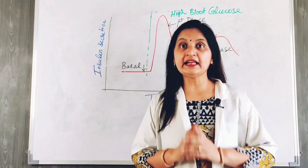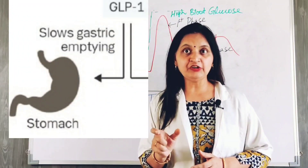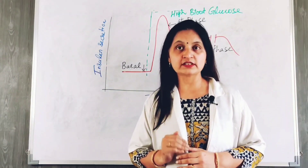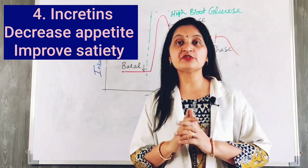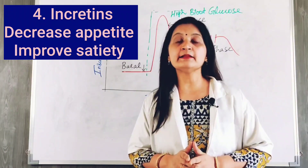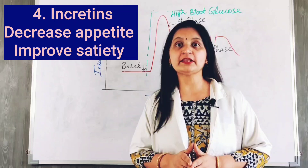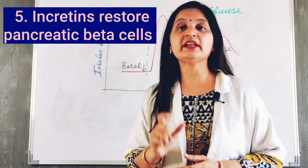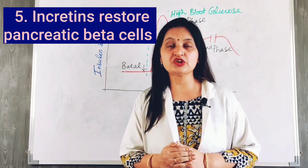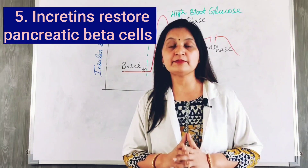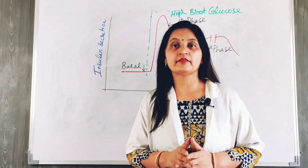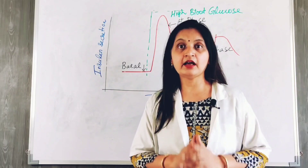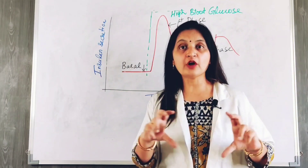The third action of incretin is that it inhibits gastric emptying and delays the entry of food into the intestine, thus inhibiting the absorption of food and helping to control blood glucose level. The fourth action is that incretins improve satiety, reducing food intake and thus lowering blood glucose. Lastly, several studies have shown that incretins restore pancreatic beta cell mass, which helps increase insulin secretion, restore insulin levels, and maintain blood glucose in the normal range. These are five important mechanisms through which incretins lower blood glucose and help maintain it in a normal physiological range.